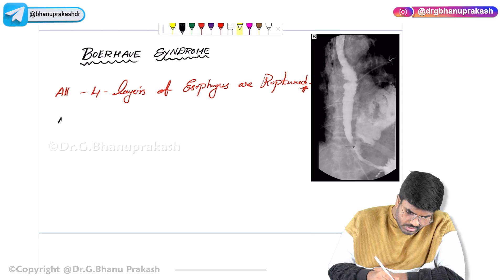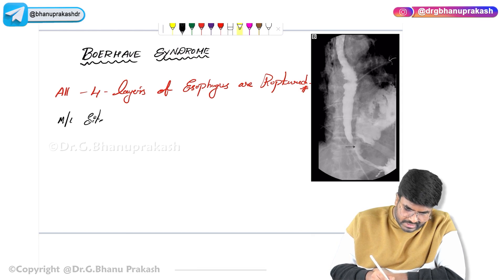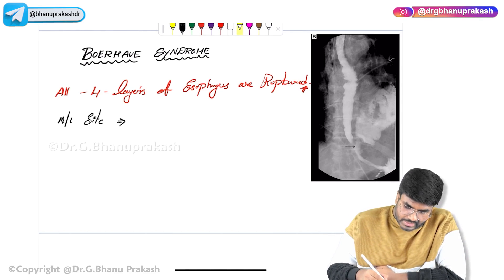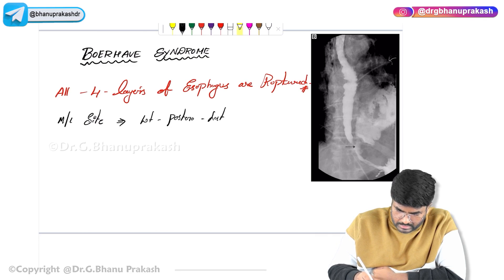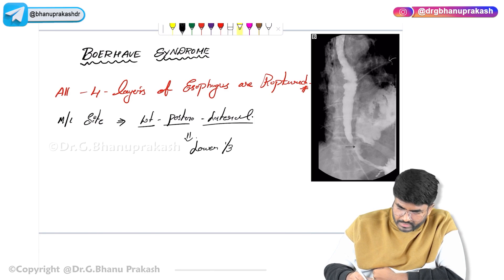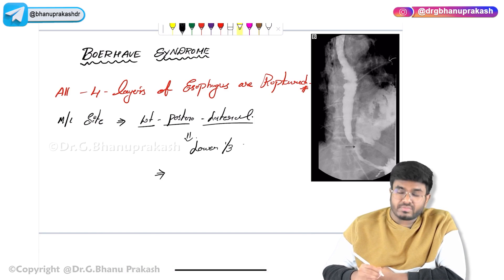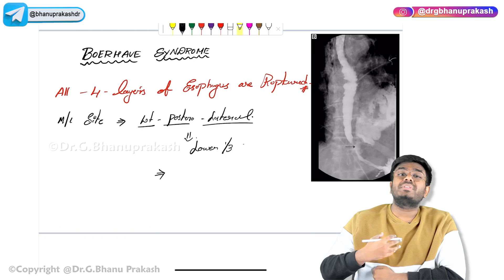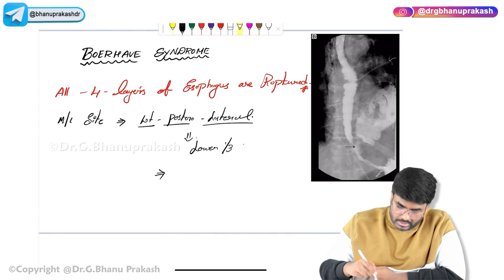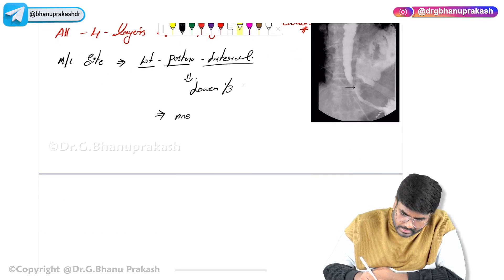This rupture is also seen during forceful vomiting in alcoholics. The most common site is the left posterolateral part of the lower one-third of the esophagus. Because of this complete rupture, gastric contents leak into the mediastinum, leading to mediastinitis.